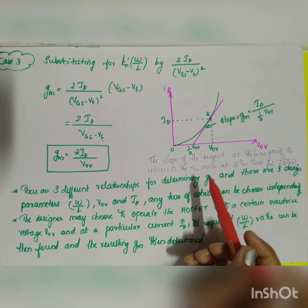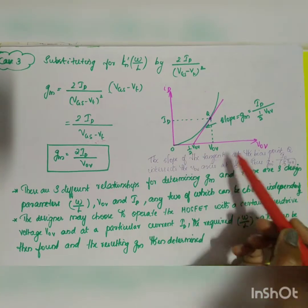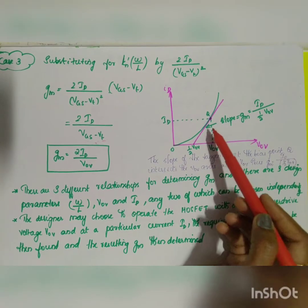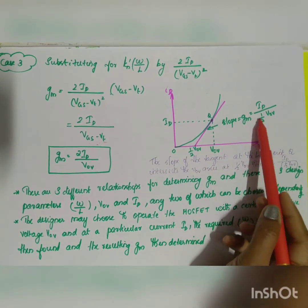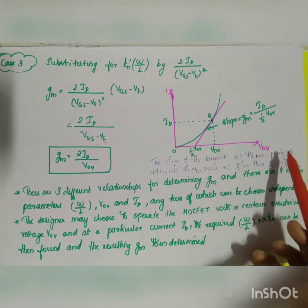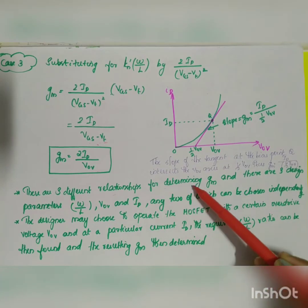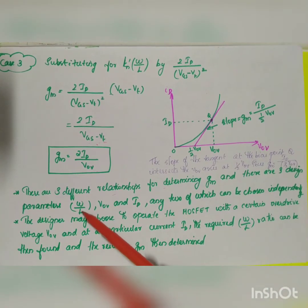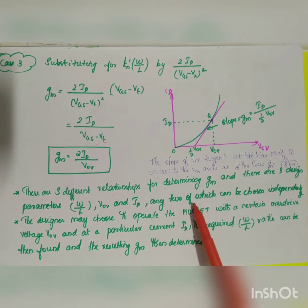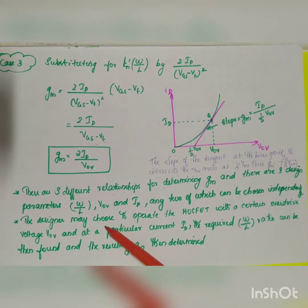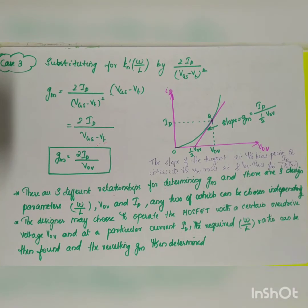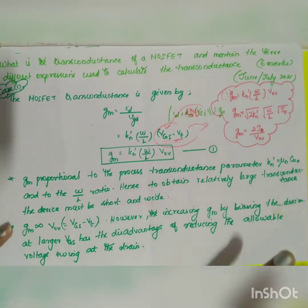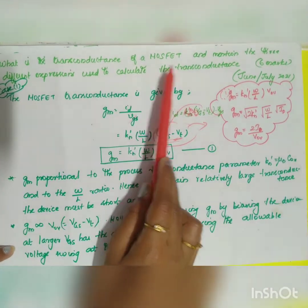These are the three expressions for transconductance. They also give the slope of the tangent at the bias point Q, which intersects at (1/2)VOV, so GM = ID_Q / (½ VOV). There are three design parameters — W/L, VOV, and ID — any two of which can be chosen independently. A designer may choose a certain overdrive voltage VOV and bias current ID; the required W/L ratio can then be found and the resulting GM determined. These are the important expressions to write for the six-mark question on transconductance of MOSFET.